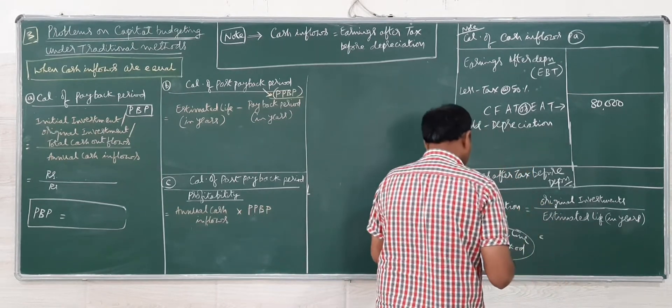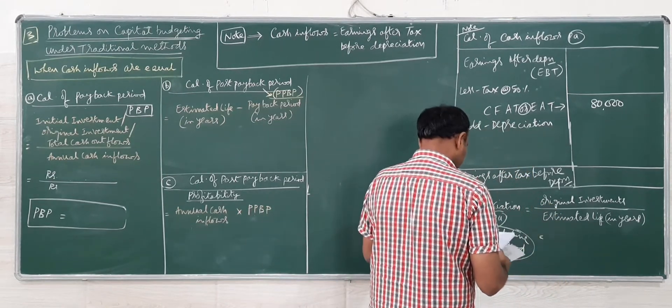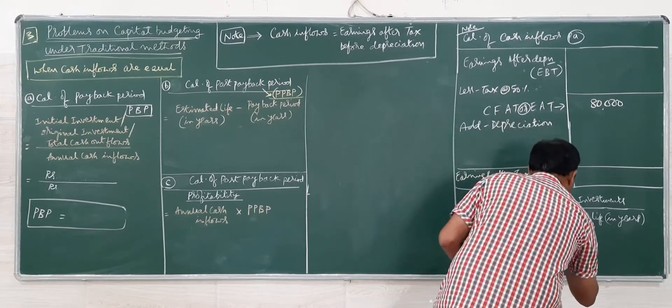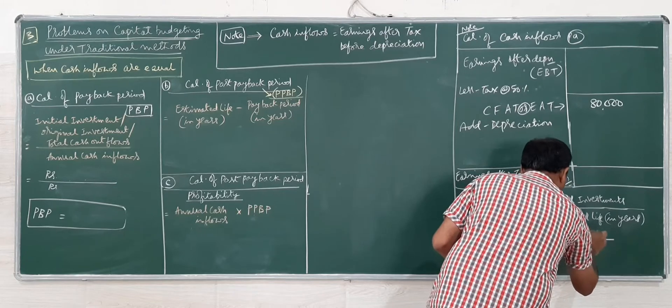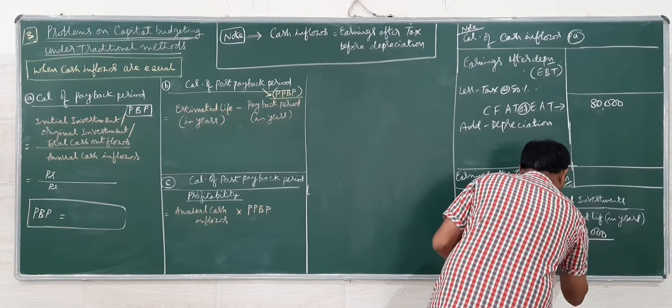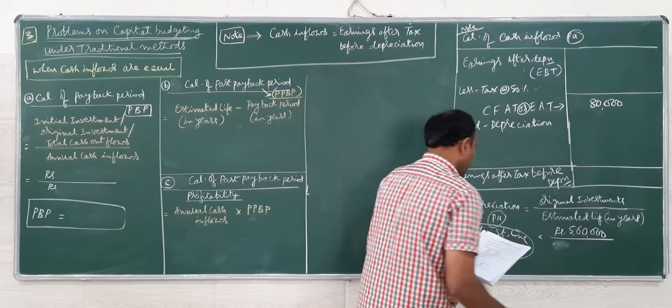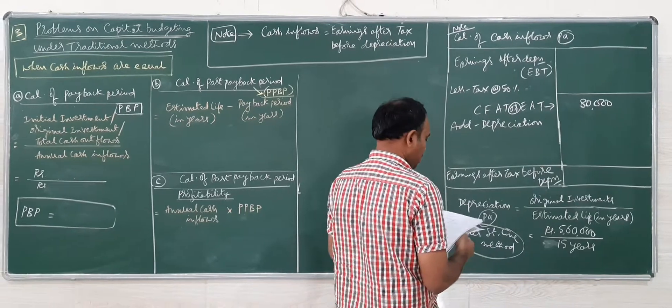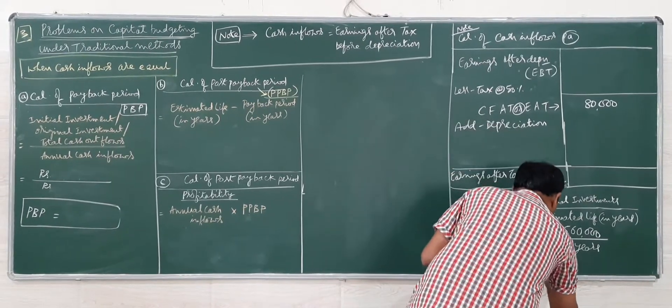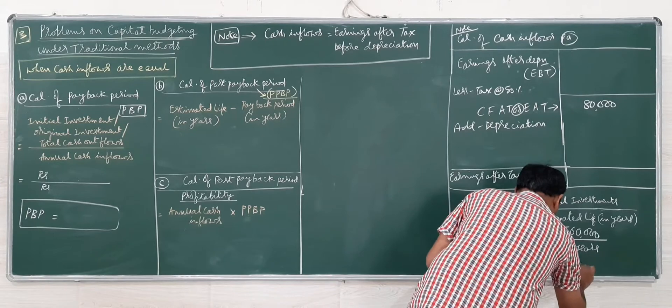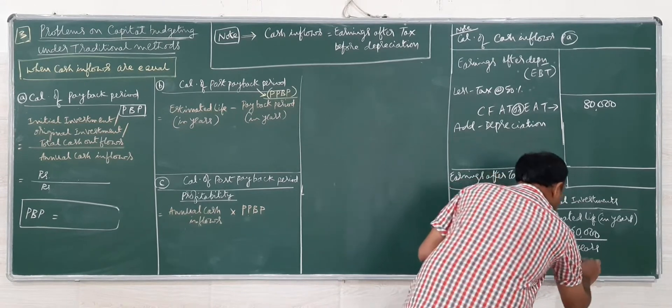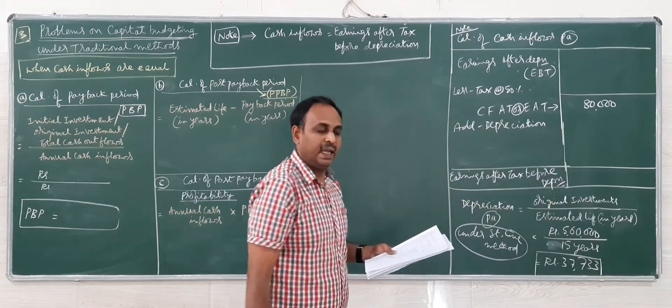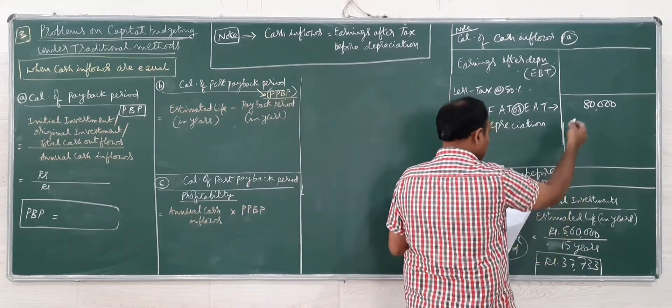Initial investment as given in the problem is Rs.560,000 divided by estimated life 15 years, so depreciation comes to Rs.37,333. I am avoiding the decimals, so depreciation is Rs.37,333.